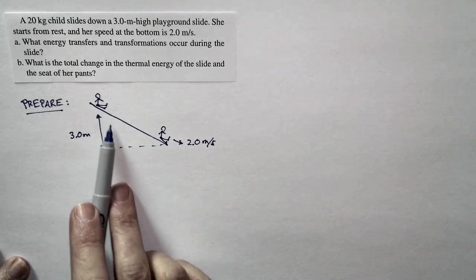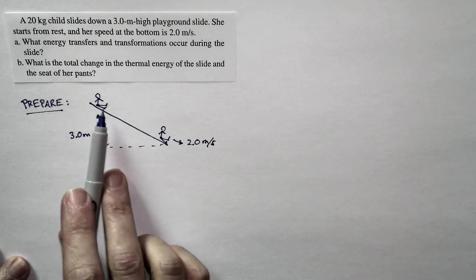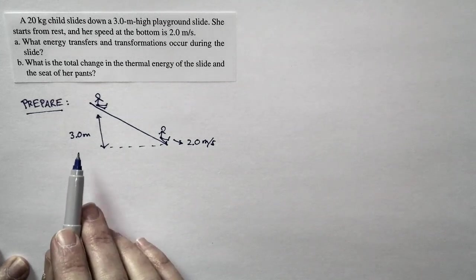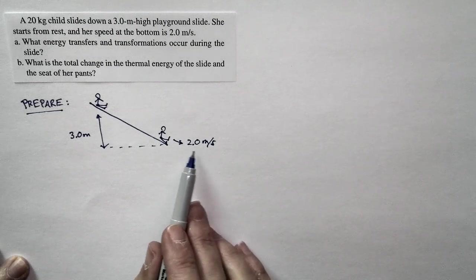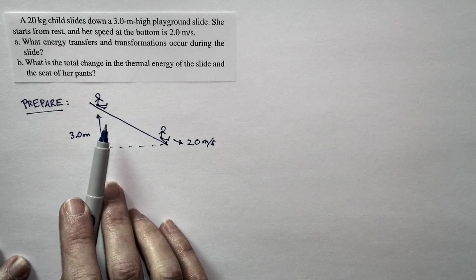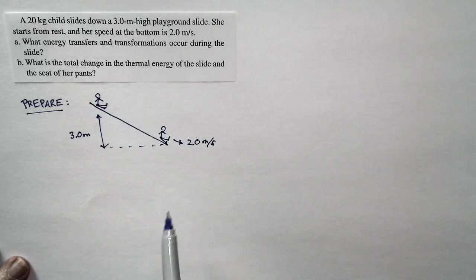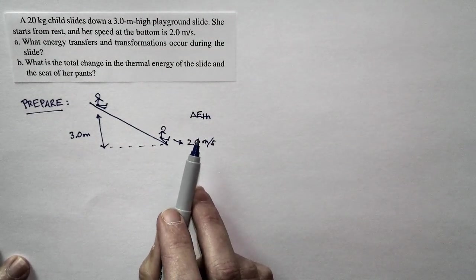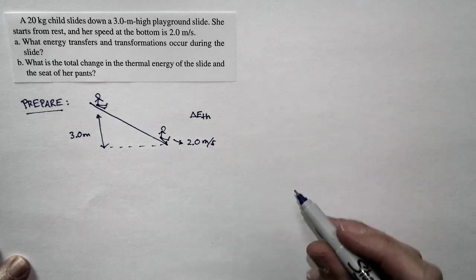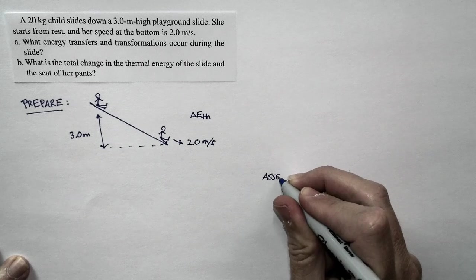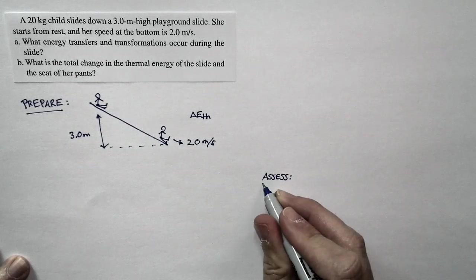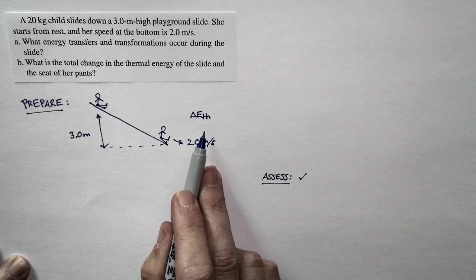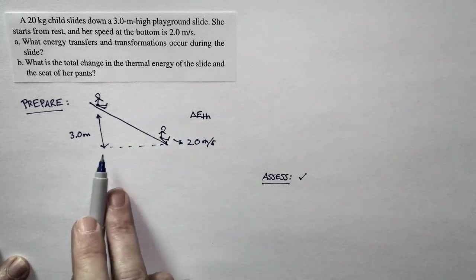As she slides down the slide she's losing potential energy. That's why she speeds up because some of the lost potential energy goes to kinetic energy. But if she fell from a height of 3 meters she would hit the ground at a lot faster than 2 meters per second. So most of the lost potential energy is going to end up in another form. Most of it goes into thermal energy. This makes sense because when you go down a slide the seat of your pants heats up, it's noticeable.